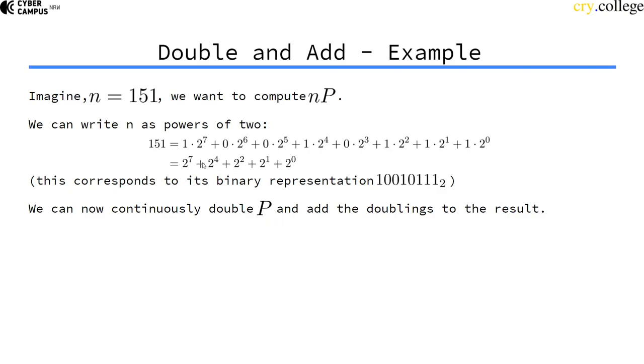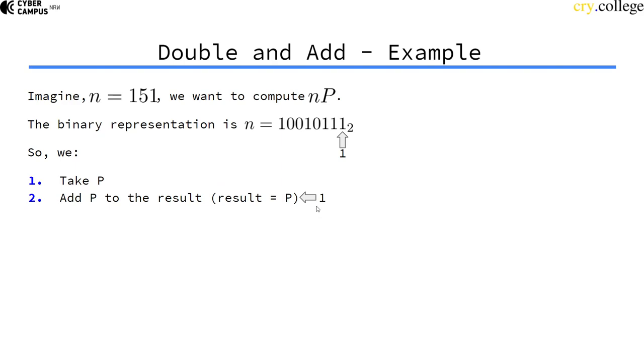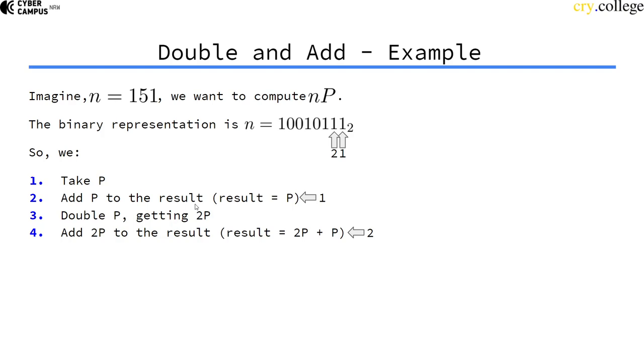Based on if it's in the powers of 2 that we have written n as. We have n, that's the binary representation of n. In the double and add algorithm the first step we take P and then we add P to the result variable.